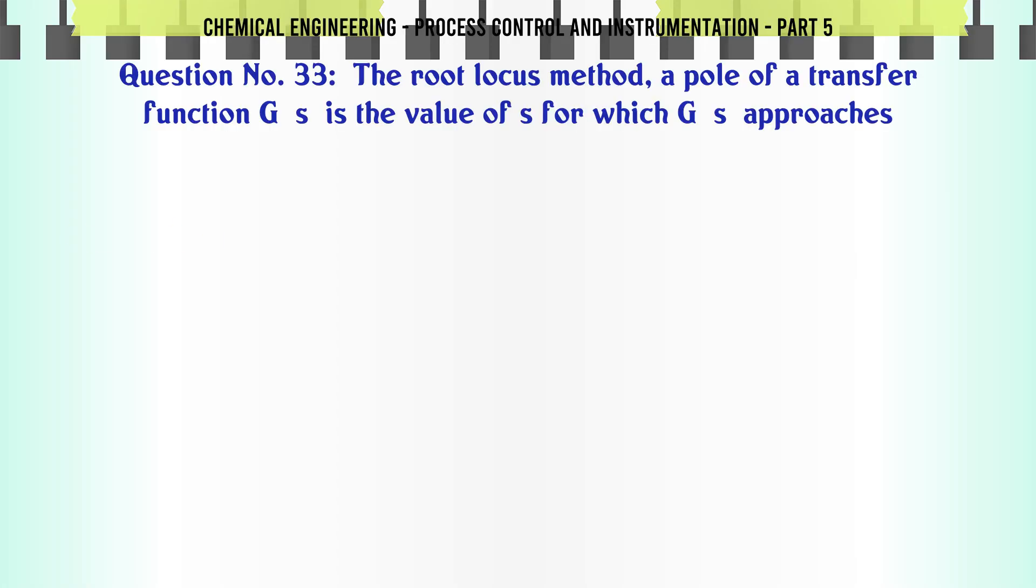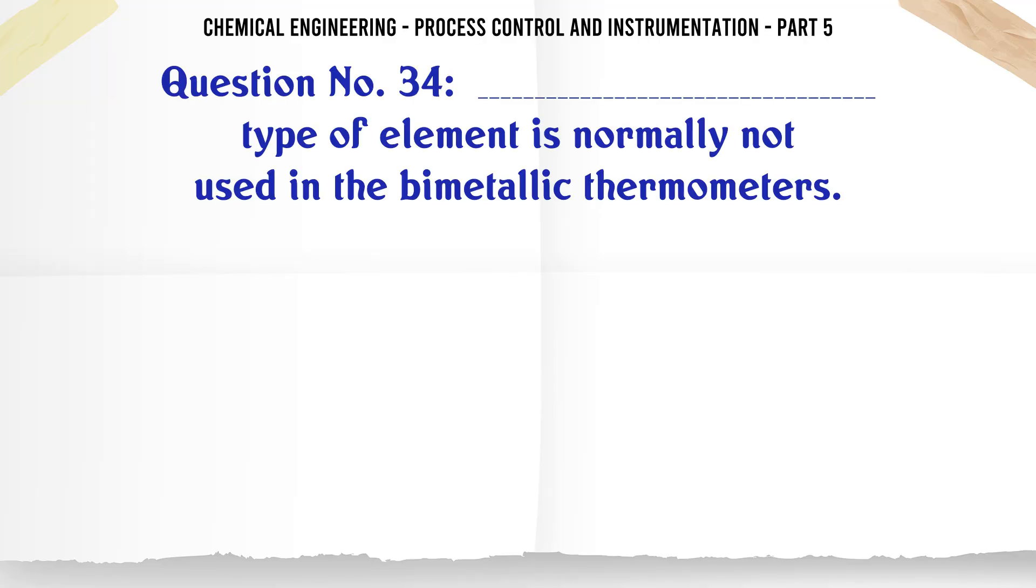The root locus method: A pole of a transfer function G(s) is the value of s for which G(s) approaches: A. 1. B. 0. C. -1. D. Infinity. The correct answer is Infinity.